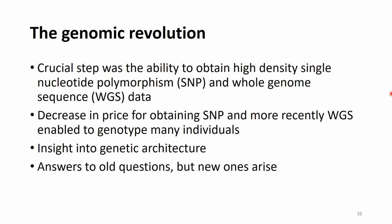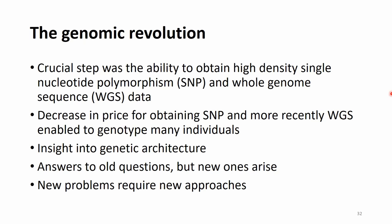The current genomics has revolutionized genetics and most fields of biological research. The crucial step was the ability to obtain whole genome sequence data, and later high-density single nucleotide polymorphism data in large amounts for a cheap price. The decrease in price for SNP markers and the huge decrease in whole genome sequencing costs enabled genotyping of many, many individuals, allowing insight into the genetic architecture of traits.